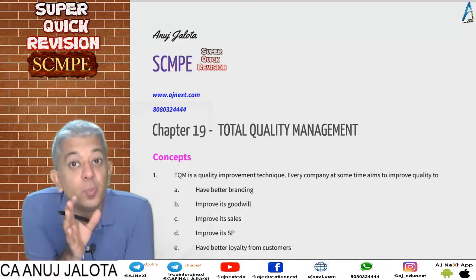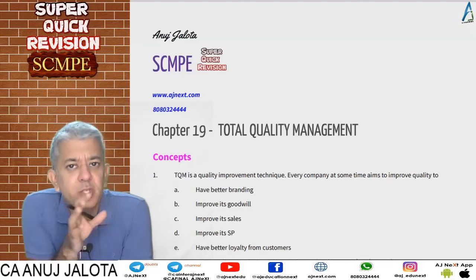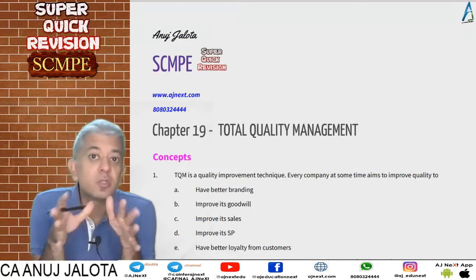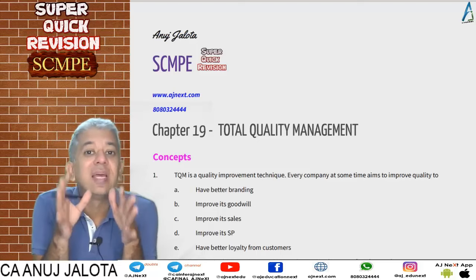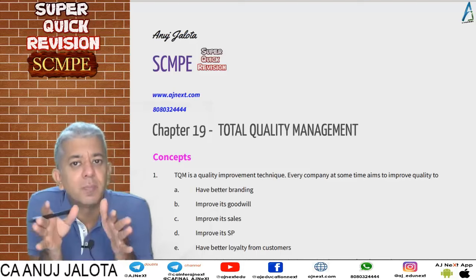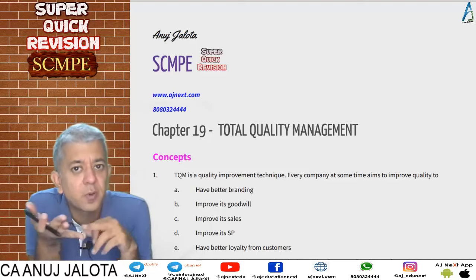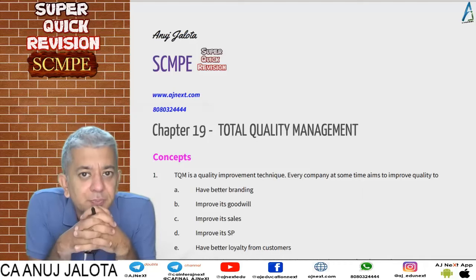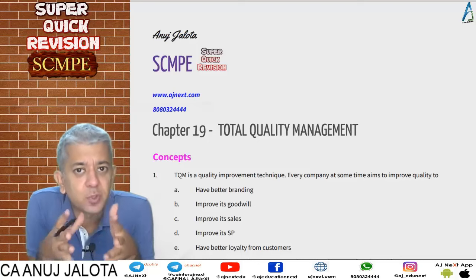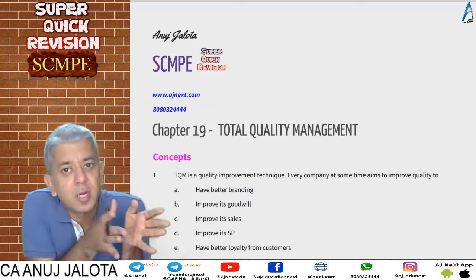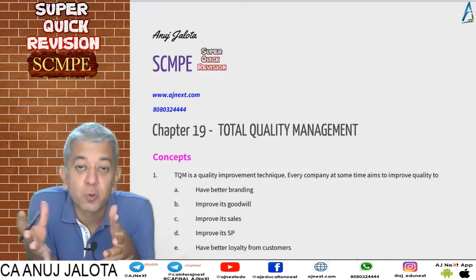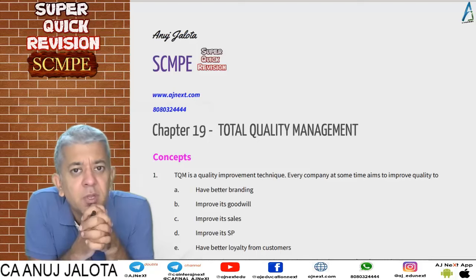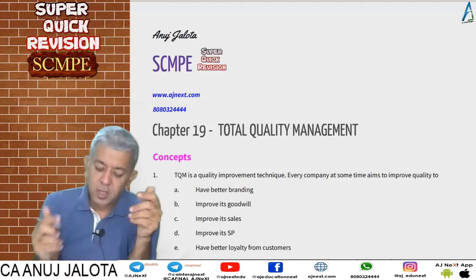We will start with a super quick revision of Total Quality Management. This topic is very important from an exam point of view. The first thing we say is: if you have great quality, nothing else is required. Companies like Microsoft, Apple, Google, and Amazon survive because of one thing — the quality of their product. Companies like Amazon, when they made products like the Fire TV stick and Echo speakers, were driven by quality.